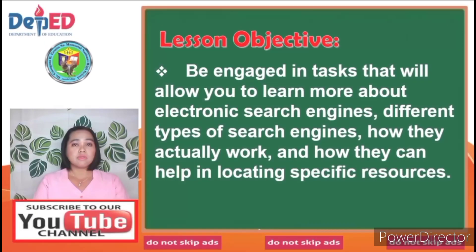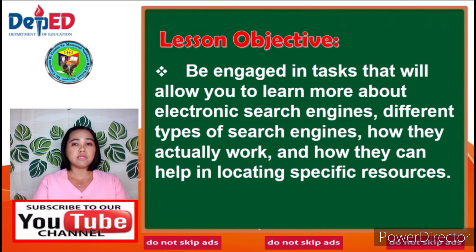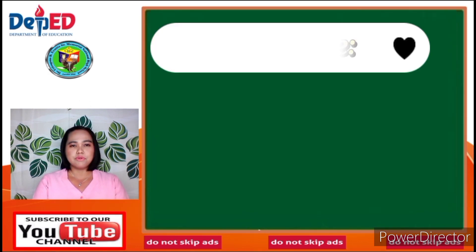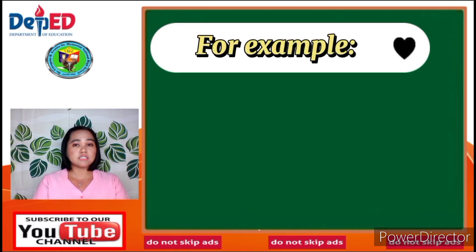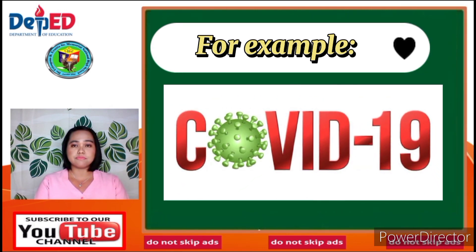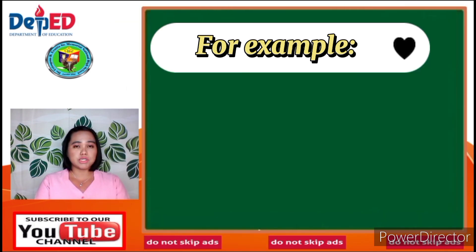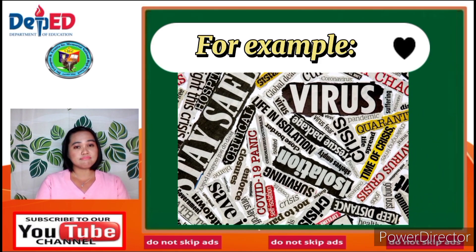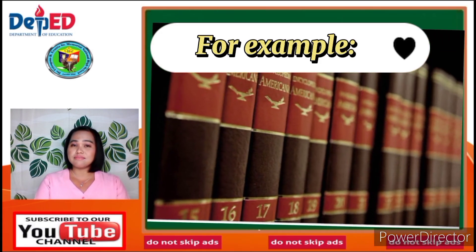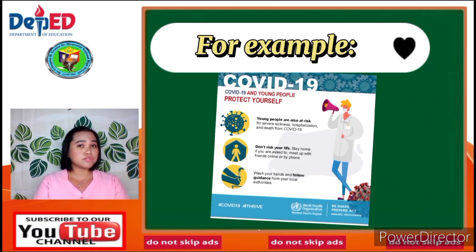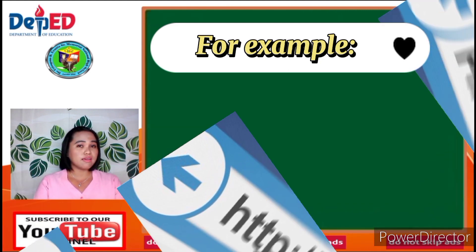As you journey through this lesson, you will be engaged in tasks that will allow you to learn more about electronic search engines, the different types of search engines, how they actually work, and how they can help in locating specific resources. For instance, if you need a specific set of information about COVID-19, what resources will you use? A newspaper? An encyclopedia? A poster? Or the internet?